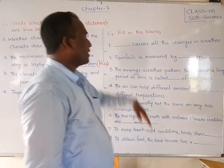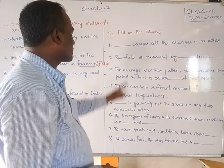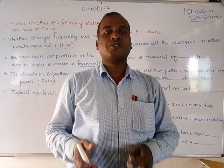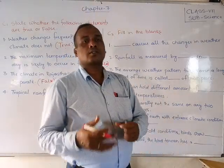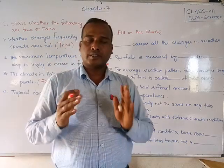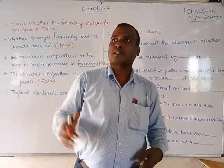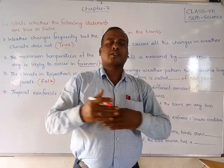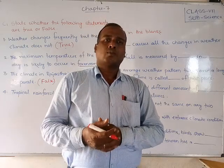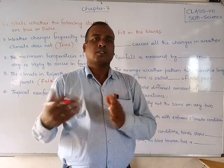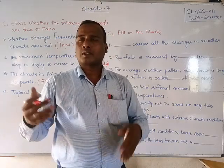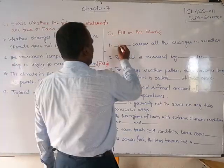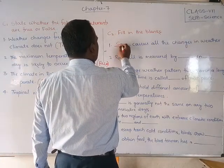Next we will discuss fill in the blanks. First blank: dash causes all the changes in weather. Weather is changing because of the sun. Due to more sunlight, dry climate forms; when the sun is at a distance, it will be more cool — that is winter season. So the sun causes weather changes. The answer is: sun.